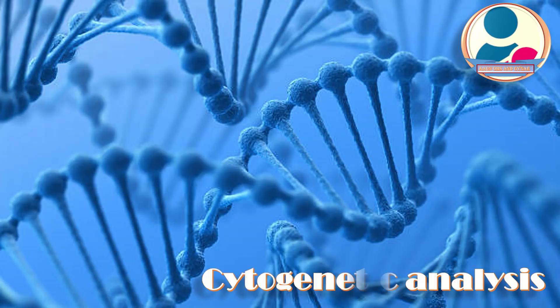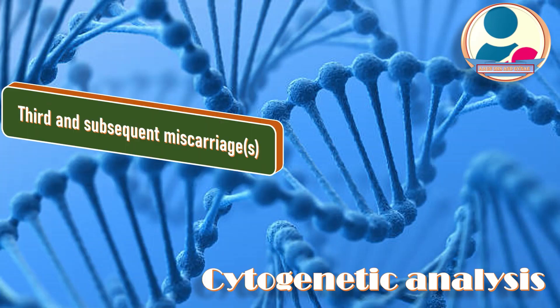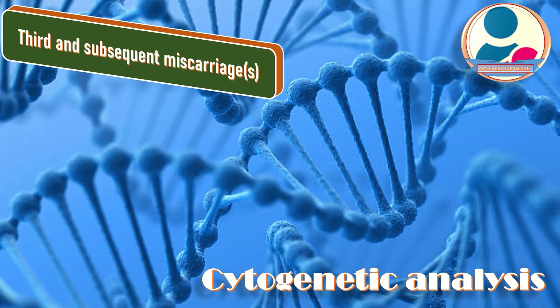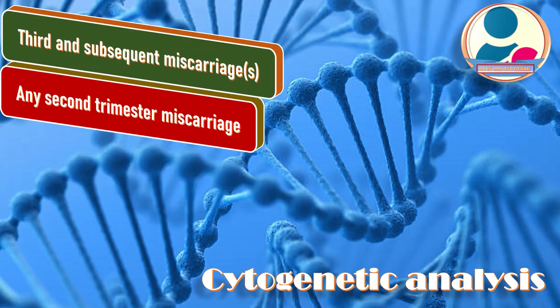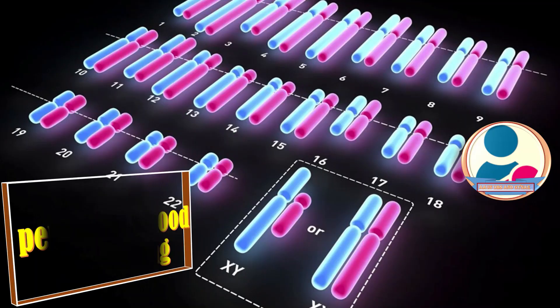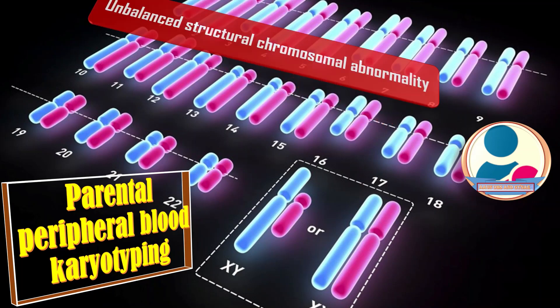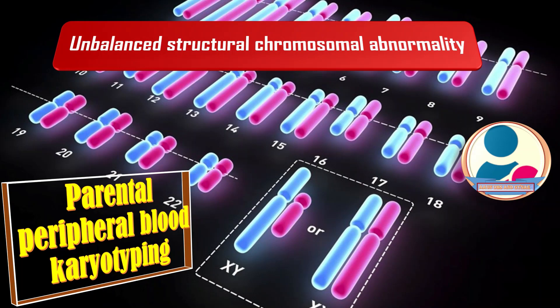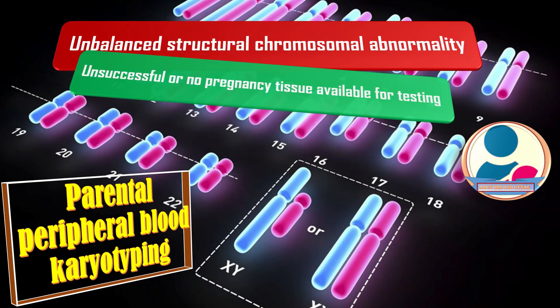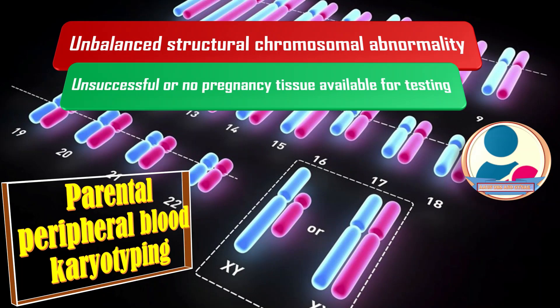Cytogenetic analysis should be offered on pregnancy tissue of third and subsequent miscarriages, and in any second trimester miscarriages. Parental peripheral blood karyotype should be offered for couples in whom testing of pregnancy tissue reports an unbalanced structural chromosomal abnormality, or where testing is unsuccessful or no pregnancy tissue is available.